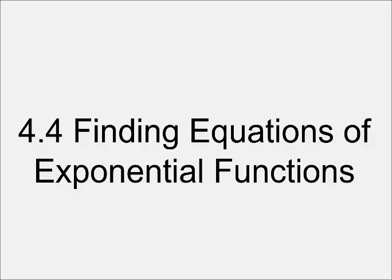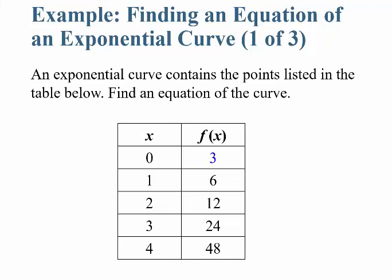So, finding equations of exponential functions. First off, an exponential curve we learned in a previous section contains the points listed in the table below. I want to find an equation, so I've got x and f(x), and I want to find an equation that maps this relationship. Notice that when x is 0, the value is 3 — that's the starting point. As x goes up 1, we go from 3 to 6; from 1 to 2, it goes from 6 to 12; 2 to 3, it goes from 12 to 24. So you're starting at 3 and it's doubling every time you increase x by 1.